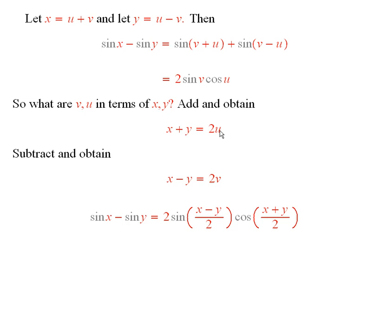So I know what u is. u is equal to x plus y over 2. So wherever I see a u, I can put an x plus y over 2, and v is equal to x minus y over 2. And I can plug those values in, those into these formulas here, and this gives us the identity that we were trying to find.